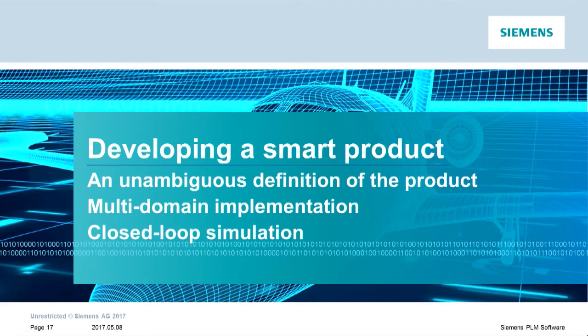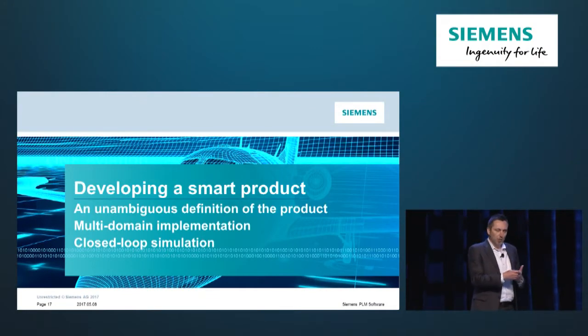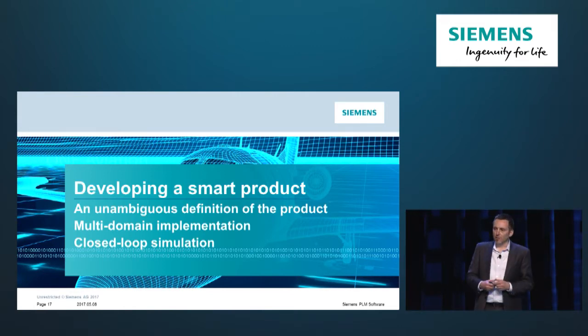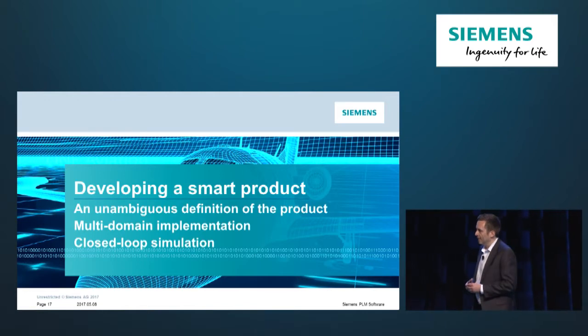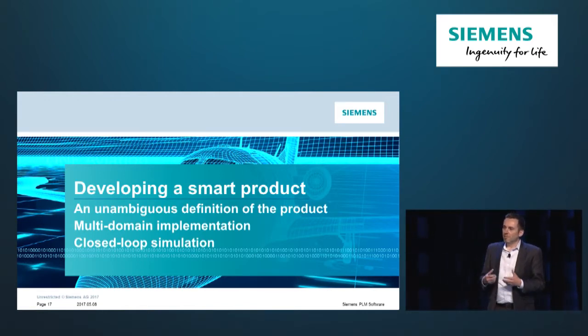What are some of the keys to developing a smart product? First, you need to develop an unambiguous definition of the product — understanding what it's supposed to do, what the systems and subsystems are, and how they interact, clearly documented for everybody. Second, you need to effectively manage a multi-domain implementation, ensuring software, electronics, and mechanical are developed to work together. Finally, you need to prove the product does what you think it should — simulate it virtually, and feed lessons learned back into the process.